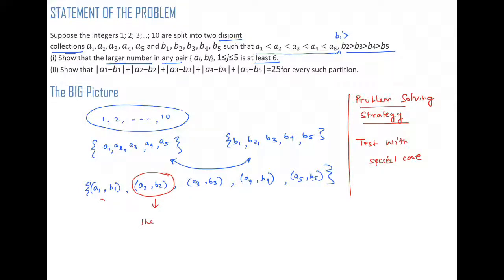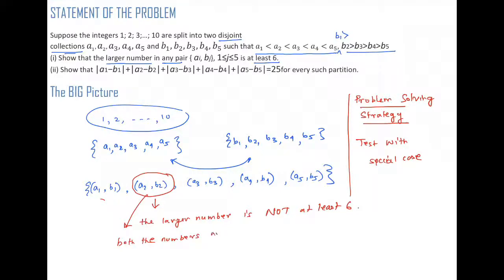If the larger number is not at least six, then basically both numbers are five or less. Think about it — if the larger number is not at least six, then obviously the other number, which is smaller than the larger one, will also be less than six. So both numbers are five or less.